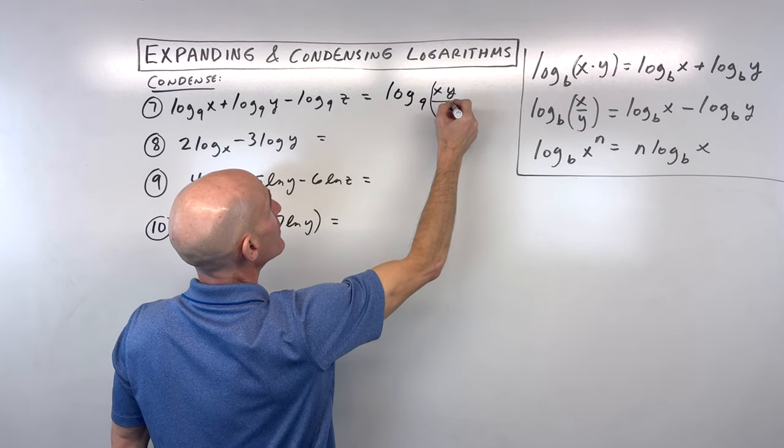Number 11: bring up the coefficients as exponents first. The 1/3 stays as is — log base 2 of x to the 1/3, which is the cube root of x. The 3 multiplied by the existing exponent (power to power) gives log base 2 of y to the sixth. We're adding, so we multiply the arguments, keeping the same base: log base 2 of the cube root of x times y to the sixth. Sometimes place in parentheses so it's clear the whole quantity is the argument.